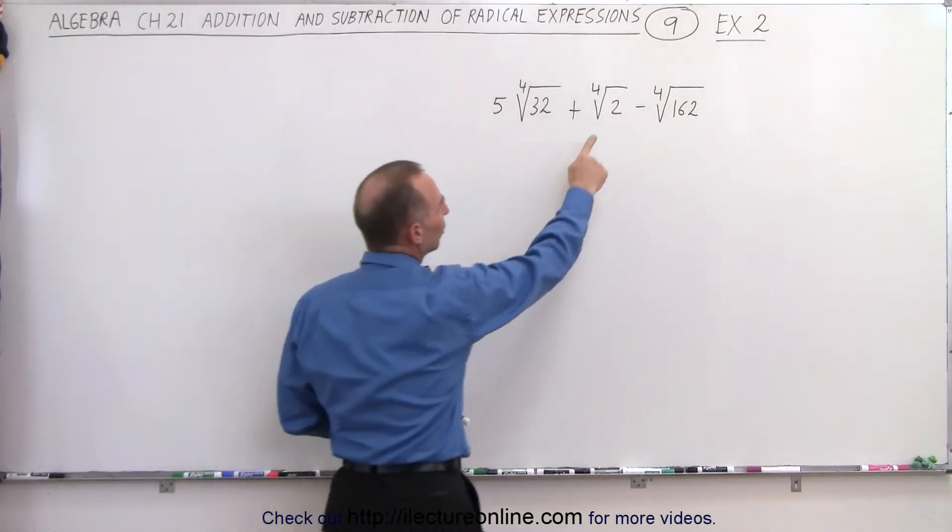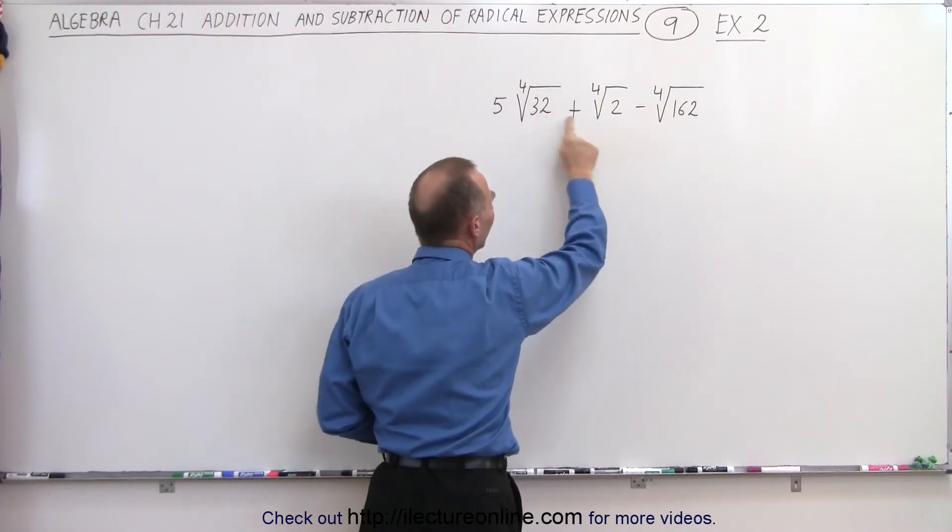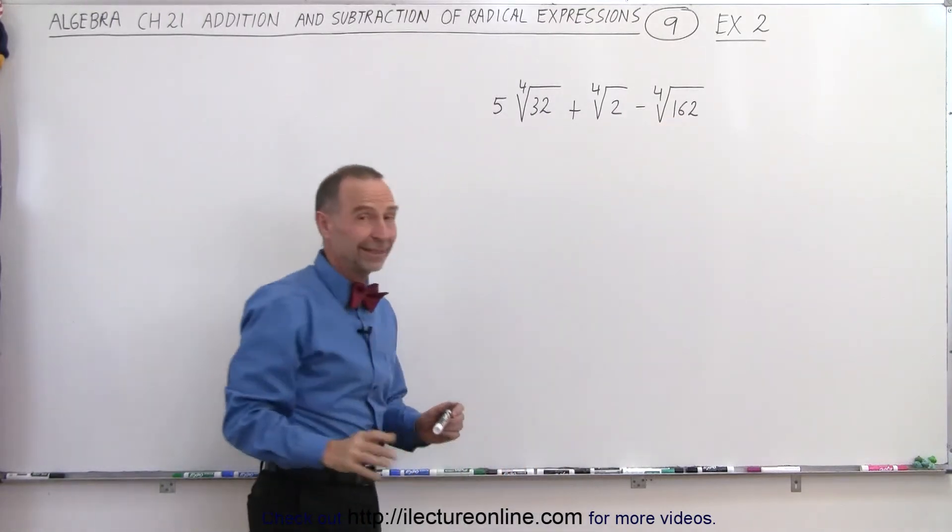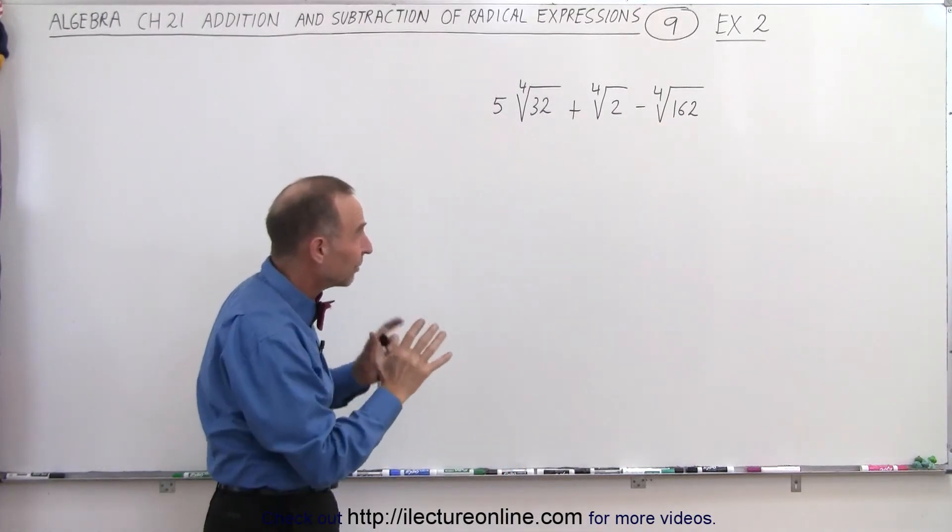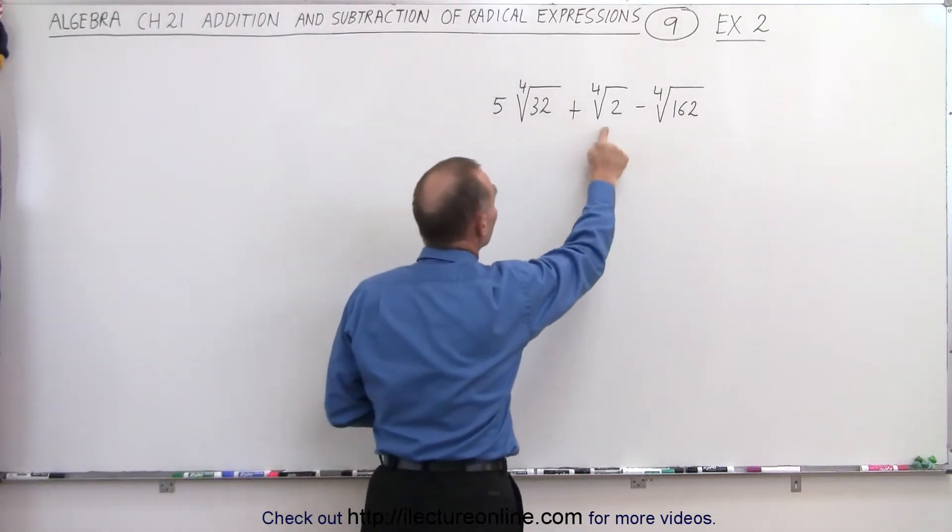Well, first of all, if you take a look at the middle one, you have the fourth root of 2. So what if I factor out a 2 here and a factor out a 2 there? Let's see what we end up with. So that's kind of a hint that we probably will end up with something times the fourth root of 2.